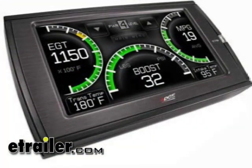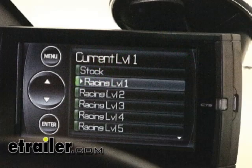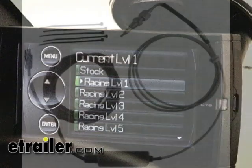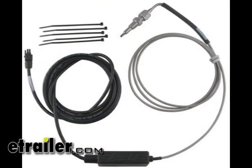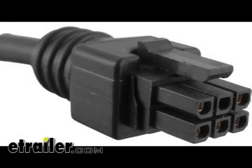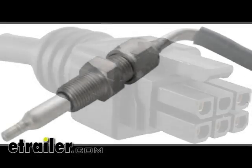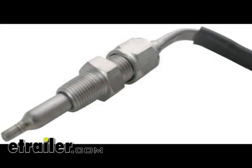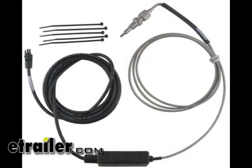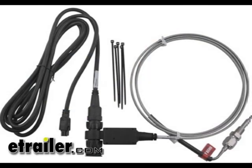And there you have it for our quick tutorial on how to use the Edge Performance Evolution CTS Programmer, part number EP85700. If you're concerned with your exhaust gas temperatures, you can add a sensor that will plug into the back of the Evolution and install into the exhaust system of your truck so that you can keep an eye on your exhaust gas temperature — part numbers EP98601 and EP98603.